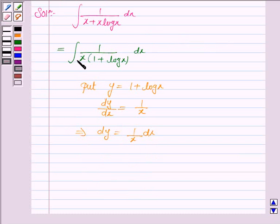And this implies dy is equal to 1 upon x dx. Now 1 upon x into dx is dy, and 1 plus log x is y. So we substitute all this in the integral. So the integral becomes 1 upon y dy.